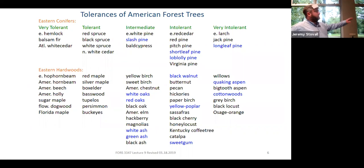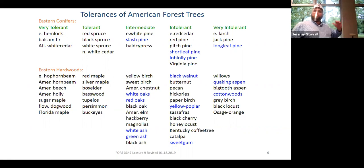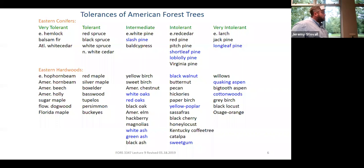When managing eastern hardwoods, if you try to go with a very shade-heavy silvicultural system like single tree selection, you end up with hornbeam, hop hornbeam, flowering dogwood, Florida maple — most of these aren't even overstory trees. They can't even make it into the overstory. This is why you really don't see single tree selection used in our part of the world. Some valuable trees like sugar maple we just don't have here in the South, so you don't tend to see single tree selection used in southern hardwoods.